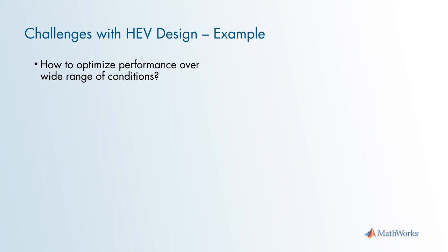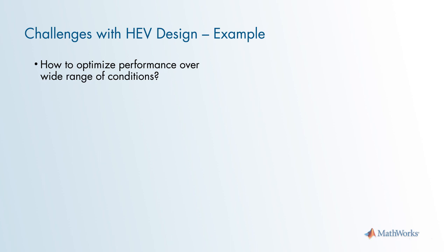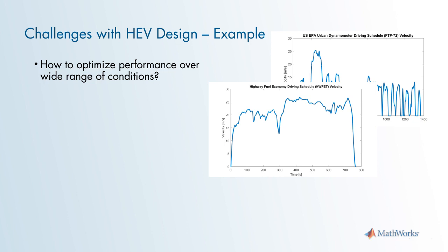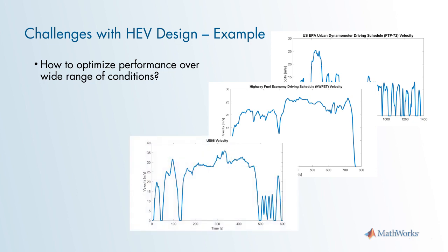Another design challenge example is how to optimize performance over a wide range of operating conditions. Conditions include different type of drive cycles. Drive cycles, such as FTP72, have slower transient speeds to represent city driving. Or drive cycles can have higher steady state speeds, such as the highway FET cycle. Or a drive cycle can represent aggressive driving, as shown in this US06 cycle. You have to account for different road grades and temperature ranges as well. The HEV controller has to reduce the total energy consumption, reduce emissions, and meet drivability requirements, such as maintaining or improving acceleration times and maintaining speed at different road grades.